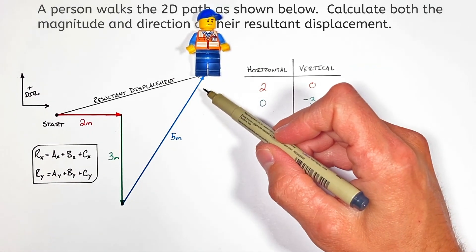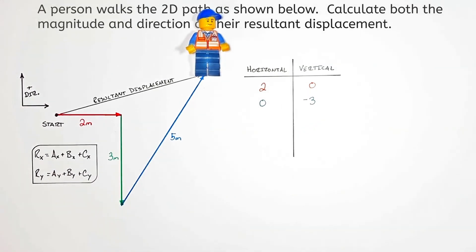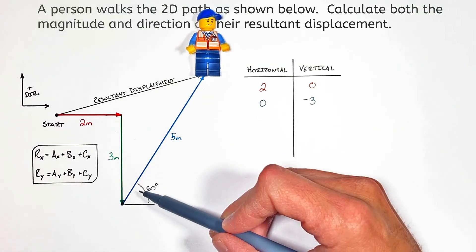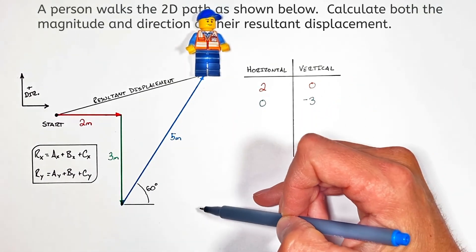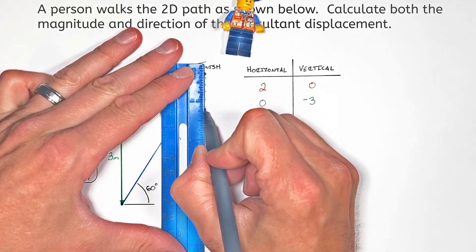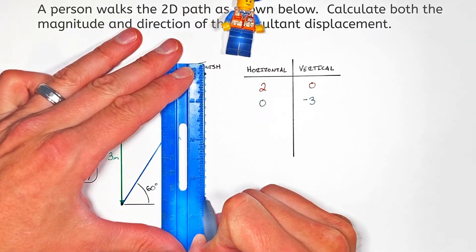Last we have this five meter vector which is acting diagonally up into the right, and let's give this an angle here so we know exactly which way it's going. Now this vector can be broken up into its components. To go back to math class, we're really just going to make a right triangle out of this where the actual vector is the hypotenuse.